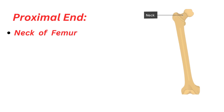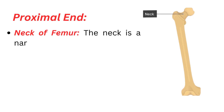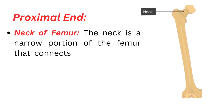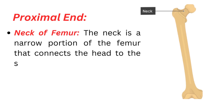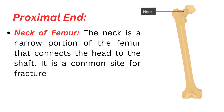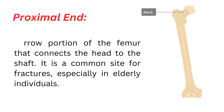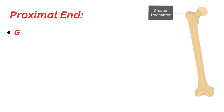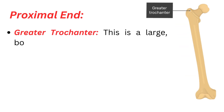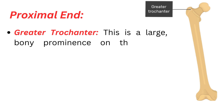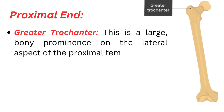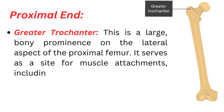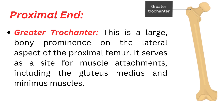Neck of femur: the neck is a narrow portion of the femur that connects the head to the shaft. It is a common site for fractures, especially in elderly individuals. Greater trochanter: this is a large, bony prominence on the lateral aspect of the proximal femur. It serves as a site for muscle attachments, including the gluteus medius and minimus muscles.